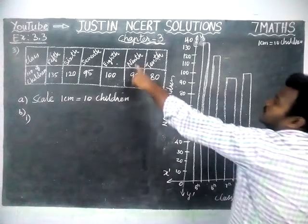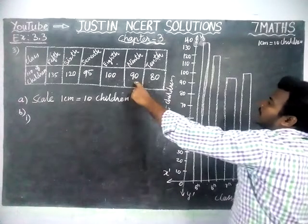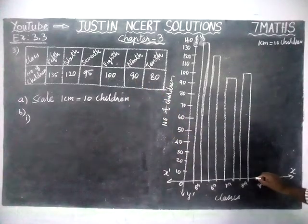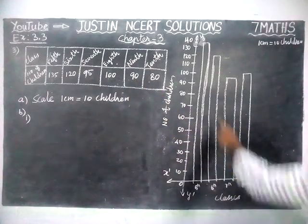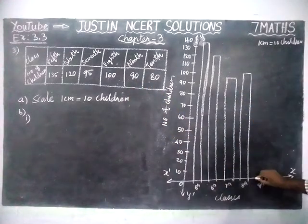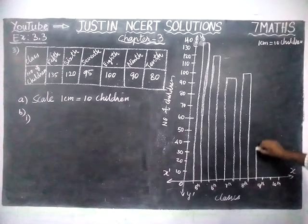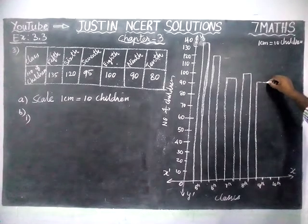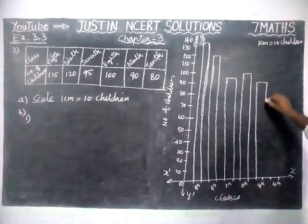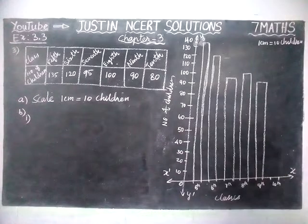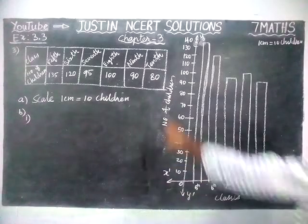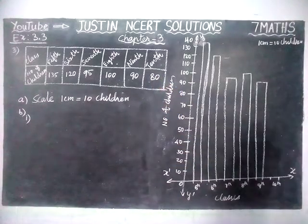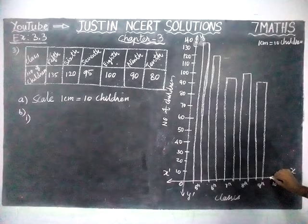Next, in 9th standard — 90, so up to 90. Next on 10th standard, 80 children — so 80 children on 10th standard.